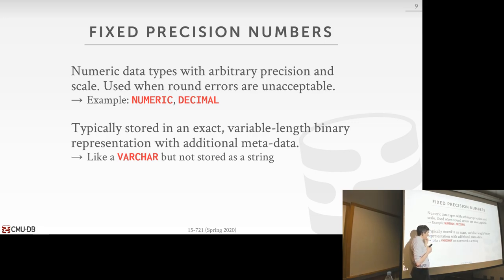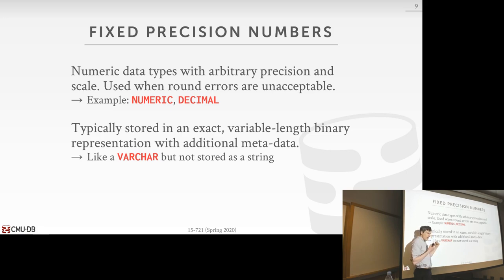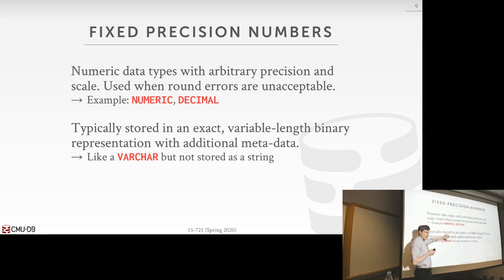What Postgres actually does is store the decimal point number essentially as a varchar — like a string — and then they have extra metadata to keep track of where the decimal point is, whether it's negative or positive, and rounding issues. They have giant switch statements to deal with all these different variations, and it runs about twice as slow as floating point numbers. The Hyper guys have a low-level bit manipulation method for storing fixed-point decimals that is very, very efficient, and in some cases can run faster than floating point numbers. The German guy recommended a book called Hacker's Delight that shows you how to do all this bit manipulation.